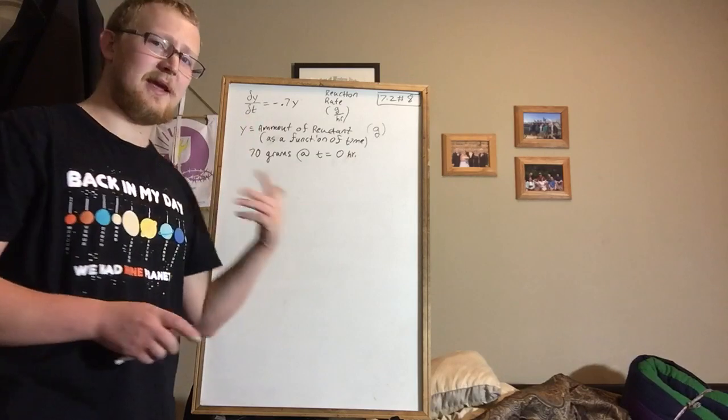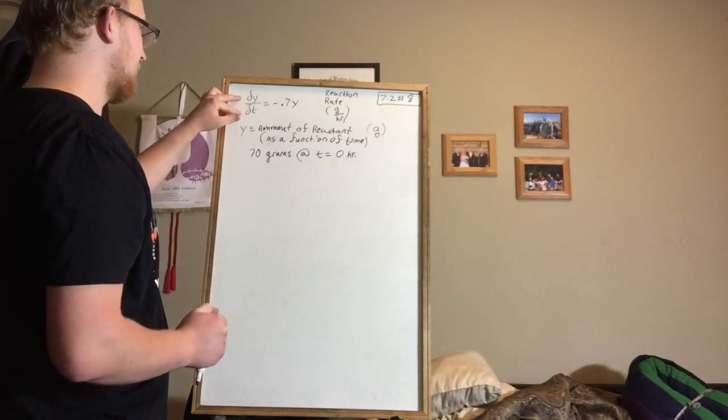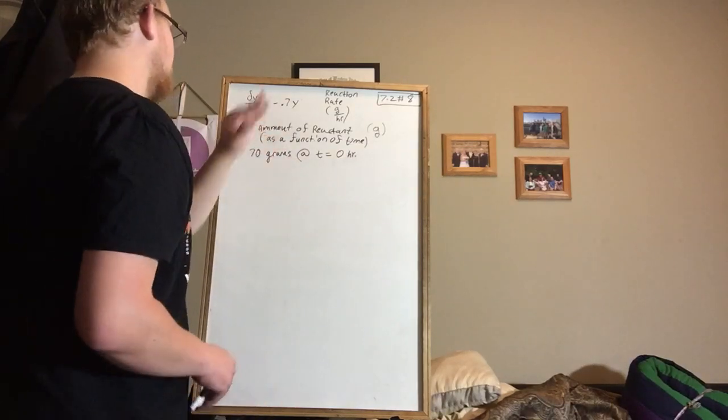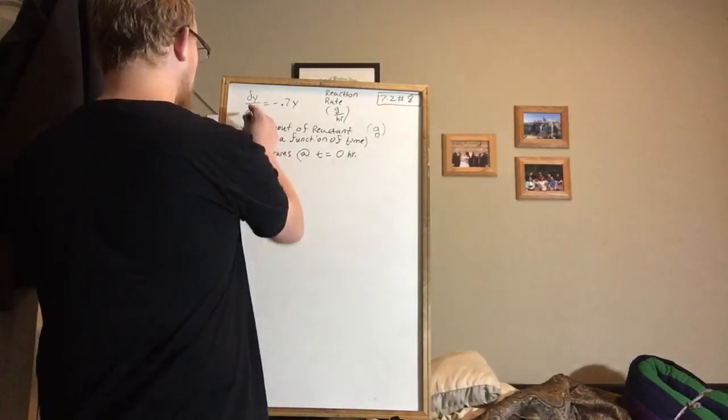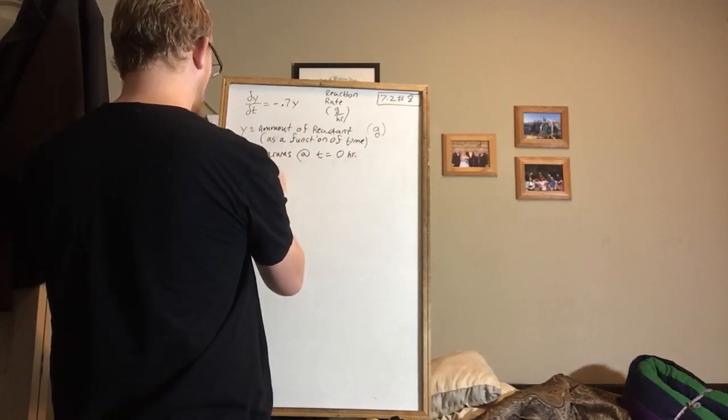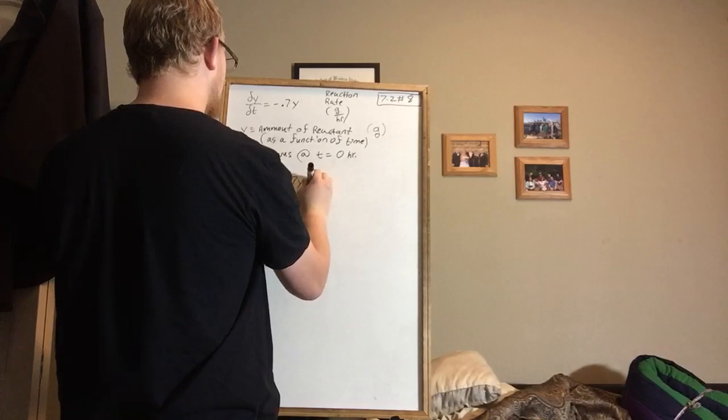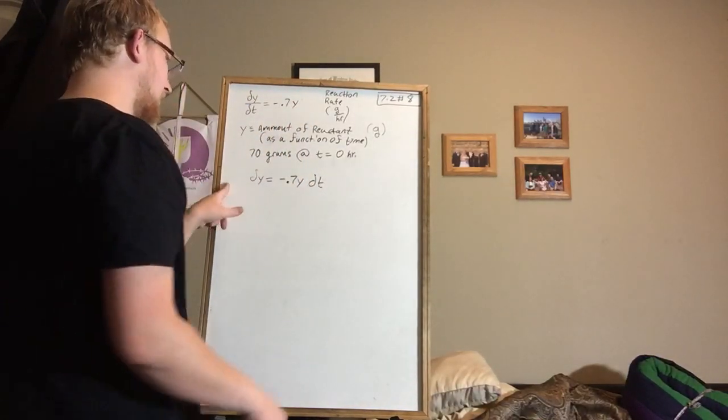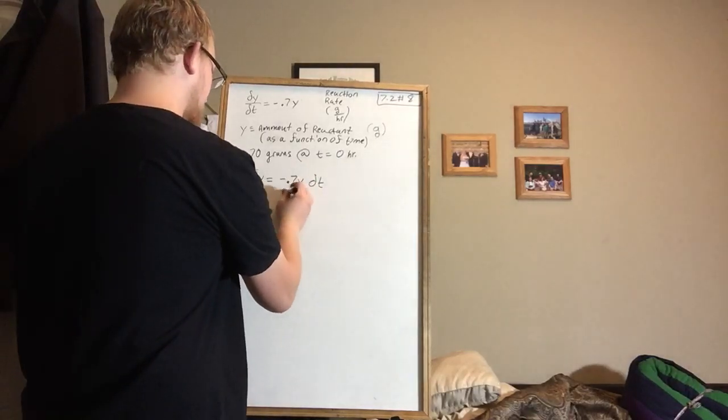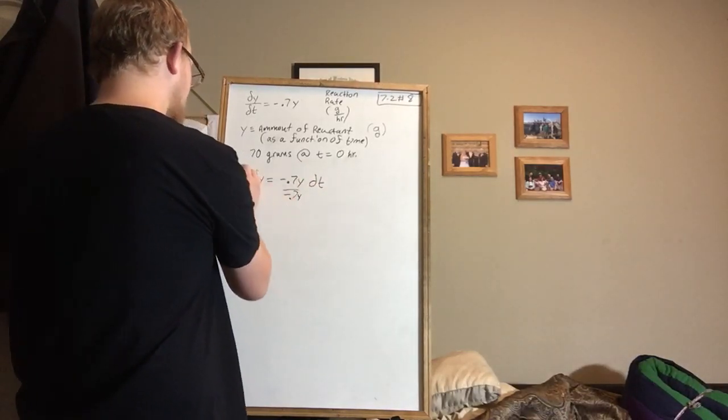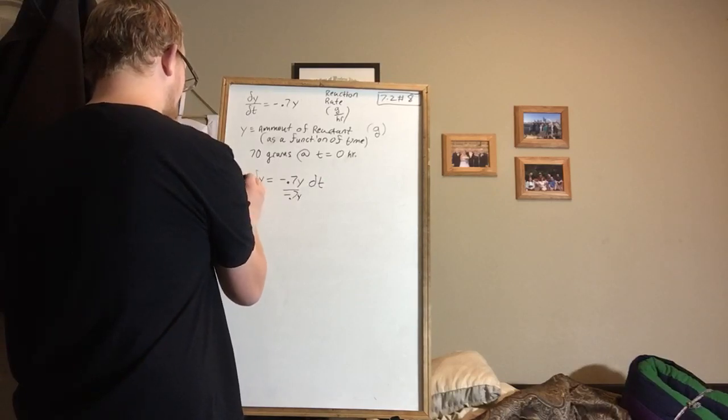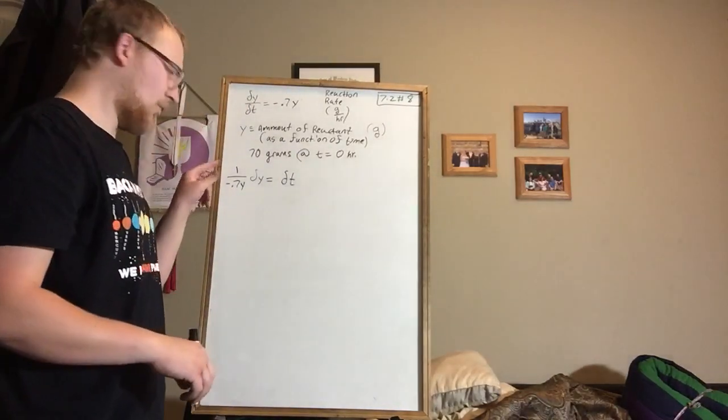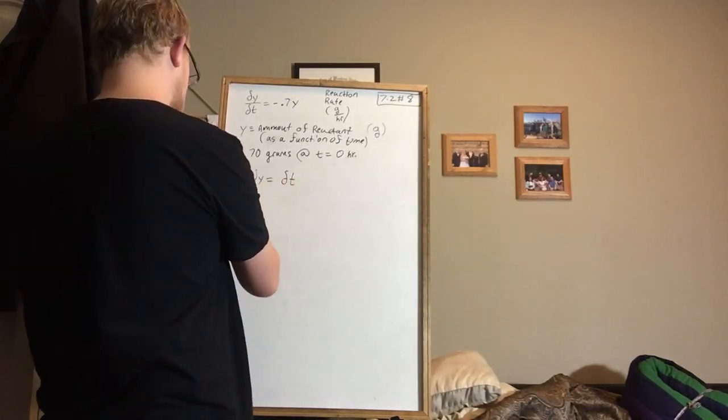The first step here is making this separable. So it already is separable. We're going to get all of the y's with dy and all of the t's with dt. So I'll multiply dt over here and get dy equals negative 0.7y dt. So I separated these. Now I can divide all the y's over here. So I'm going to divide by negative 0.7y on both sides. Now I'll cancel it on this side. And what I'm left with is 1 over negative 0.7y dy equals dt.